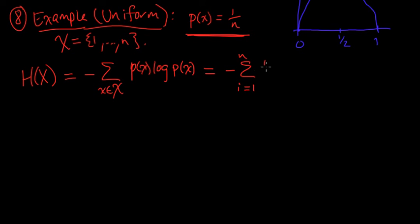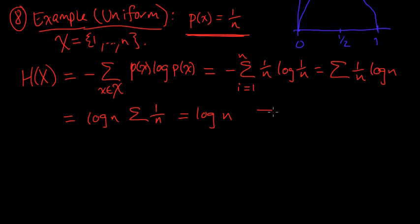1 over n log 1 over n, and minus log of 1 over n is just log of n. So let's just pull that out. Log of n sum from 1 to n of 1 over n is log of n. So that means the entropy, I'll start using our notation up there, h of p, these are equal, p is the distribution here, equals log n for our uniform distribution.